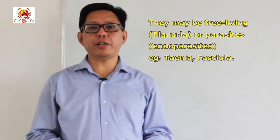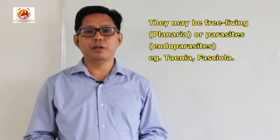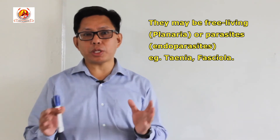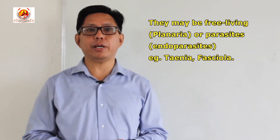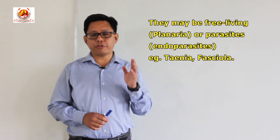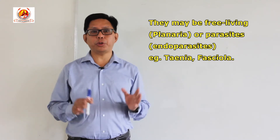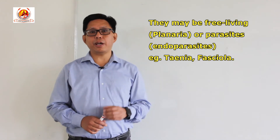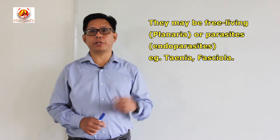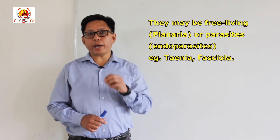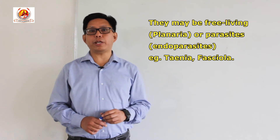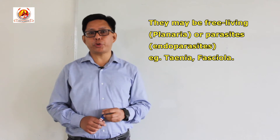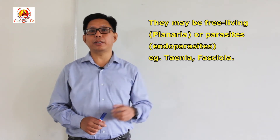Flatworms may be free-living, for example in the case of Planaria, or they may be parasitic. There are two types of parasites: ectoparasites and endoparasites. The flatworms are usually endoparasites — that means they are parasites found inside a host body. So flatworms are mostly endoparasitic in nature, meaning they take their nutrition or nourishment from other living organisms.